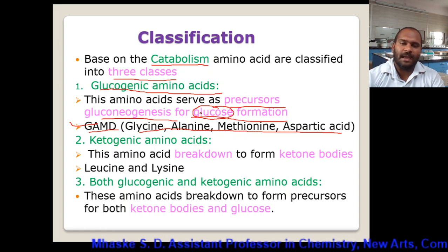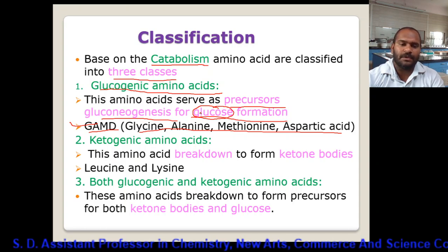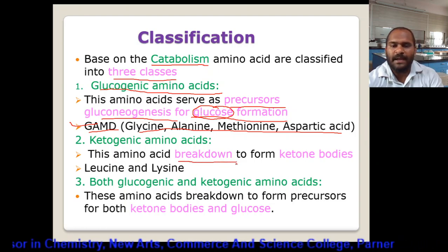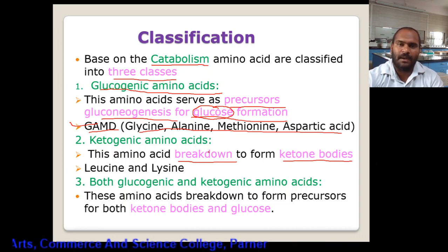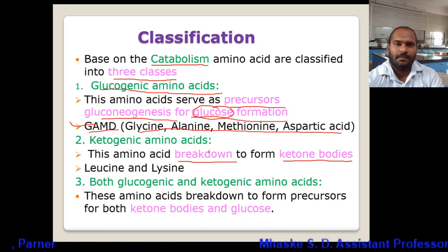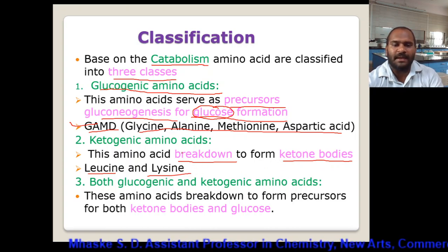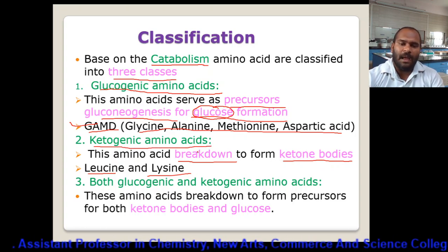Next are ketogenic amino acids. Similar to glucogenic, these amino acids are used in the breakdown to form ketone bodies from different components like carbohydrates, fatty acids, and lipids. The amino acid helps break down these molecules and convert them into ketone bodies. There are two examples: leucine and lysine, which are therefore called ketogenic amino acids.